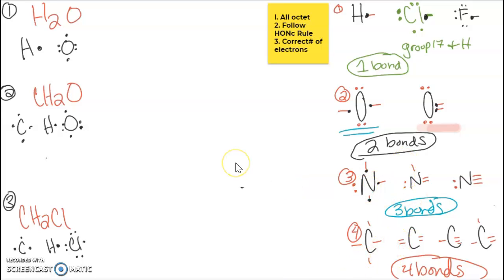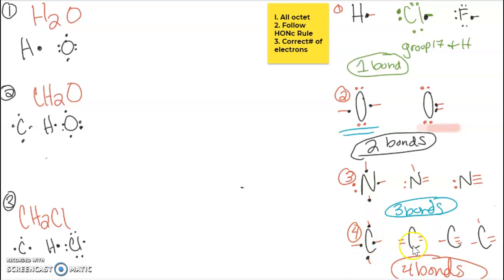Carbon has four valence electrons, so to get to eight it will pair up all four of its valence electrons — whether that is four singles, two doubles — totaling up to four bonds for carbon.